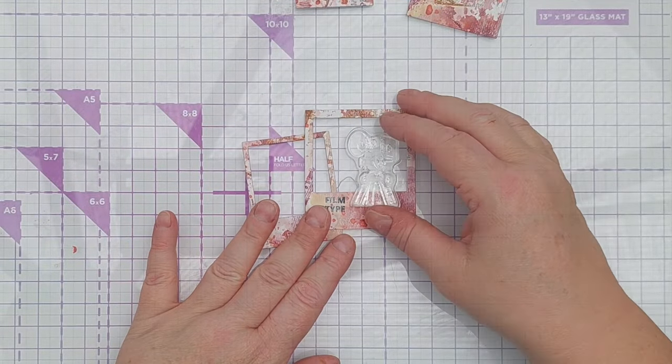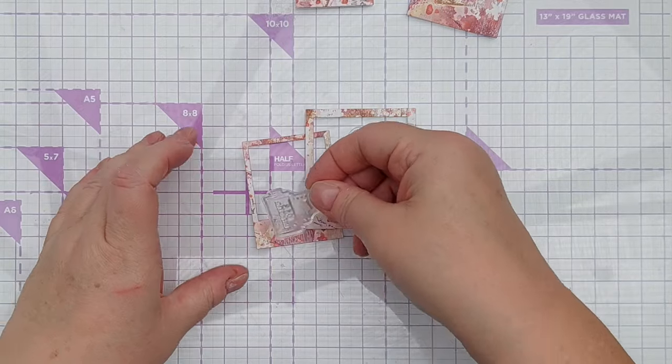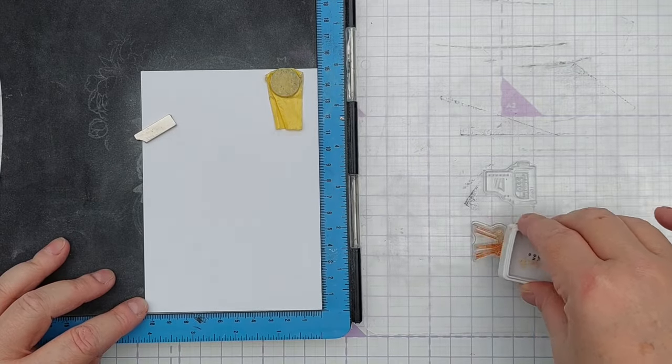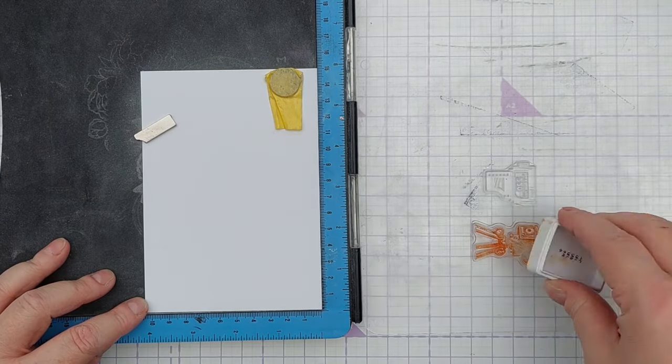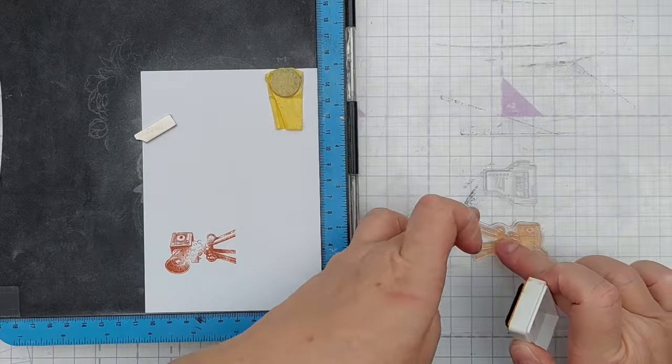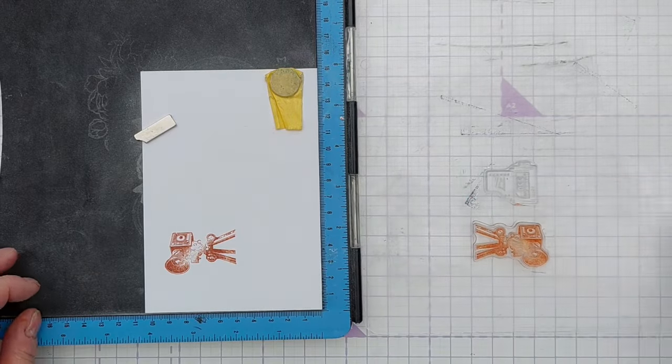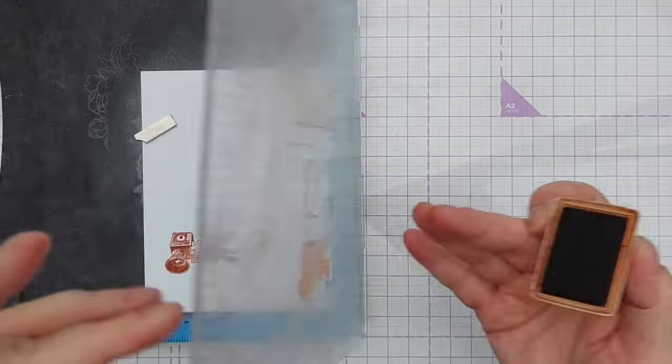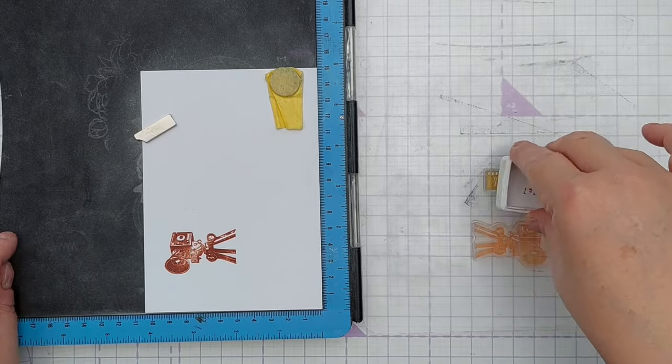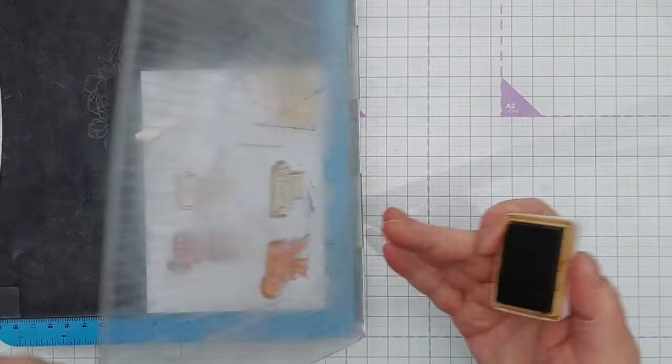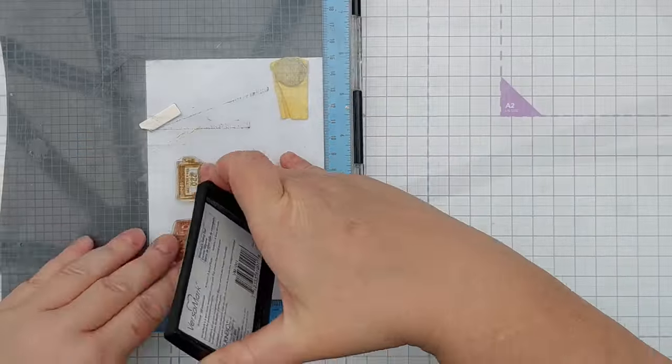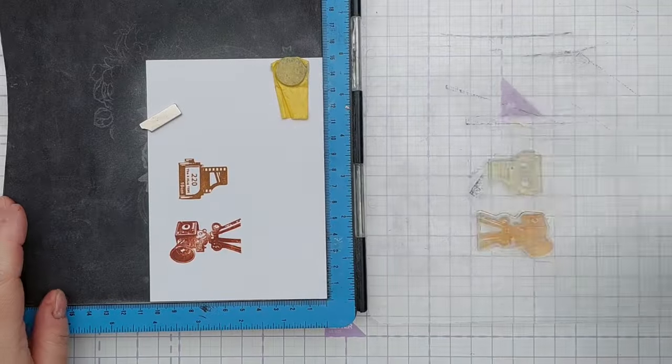On the stamp set there are a couple of icons. There's an old-fashioned camera and a film roll, so I decided to stamp those on smooth white cardstock in archival ink. I used the sepia for the camera and coffee for the film roll. I used my stamp positioner to stamp these because I knew that I might not get perfect impressions first time. And using a stamp positioner just means you can stamp over and over again in the same place until you get the kind of impression you're looking for.